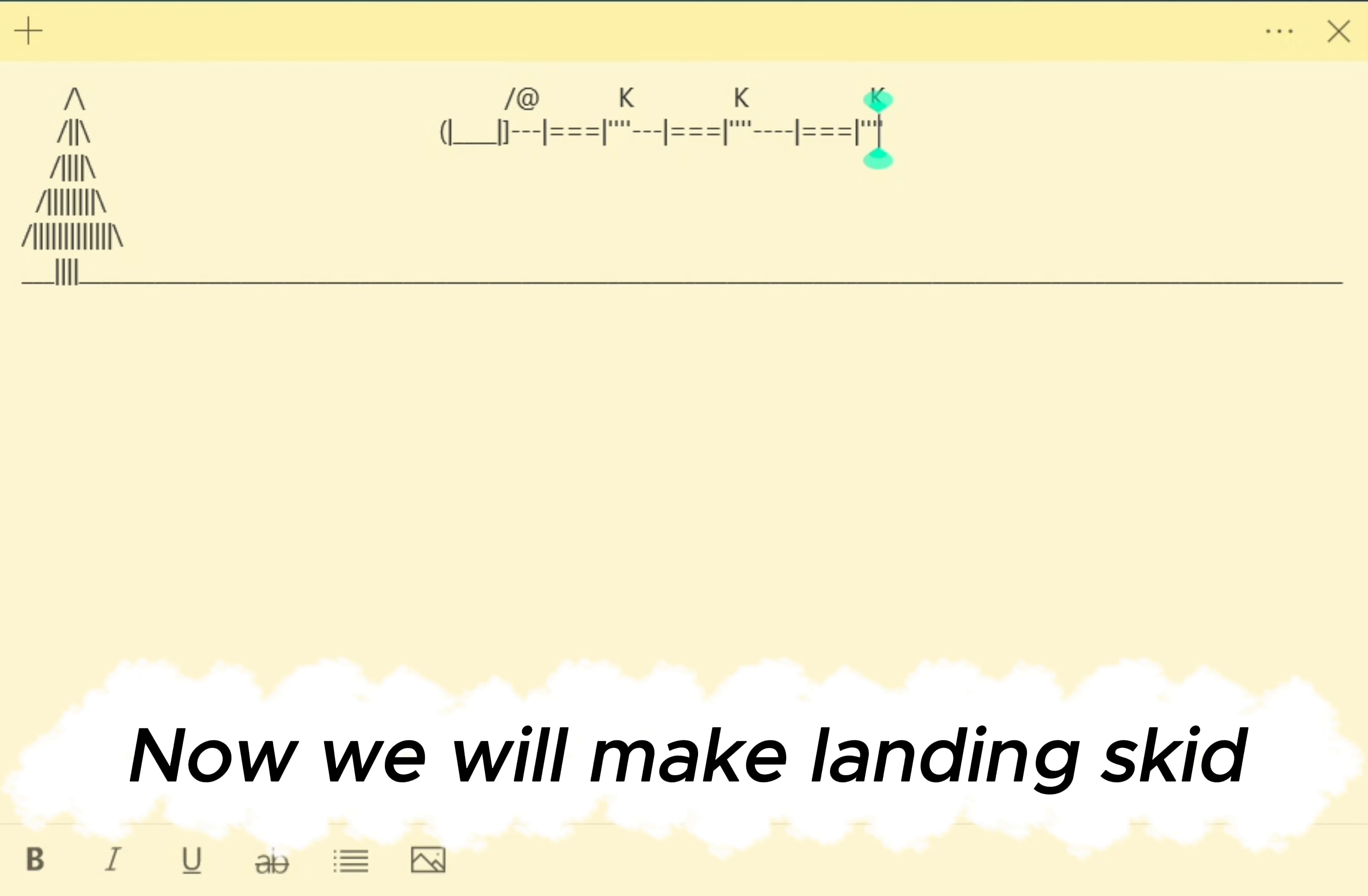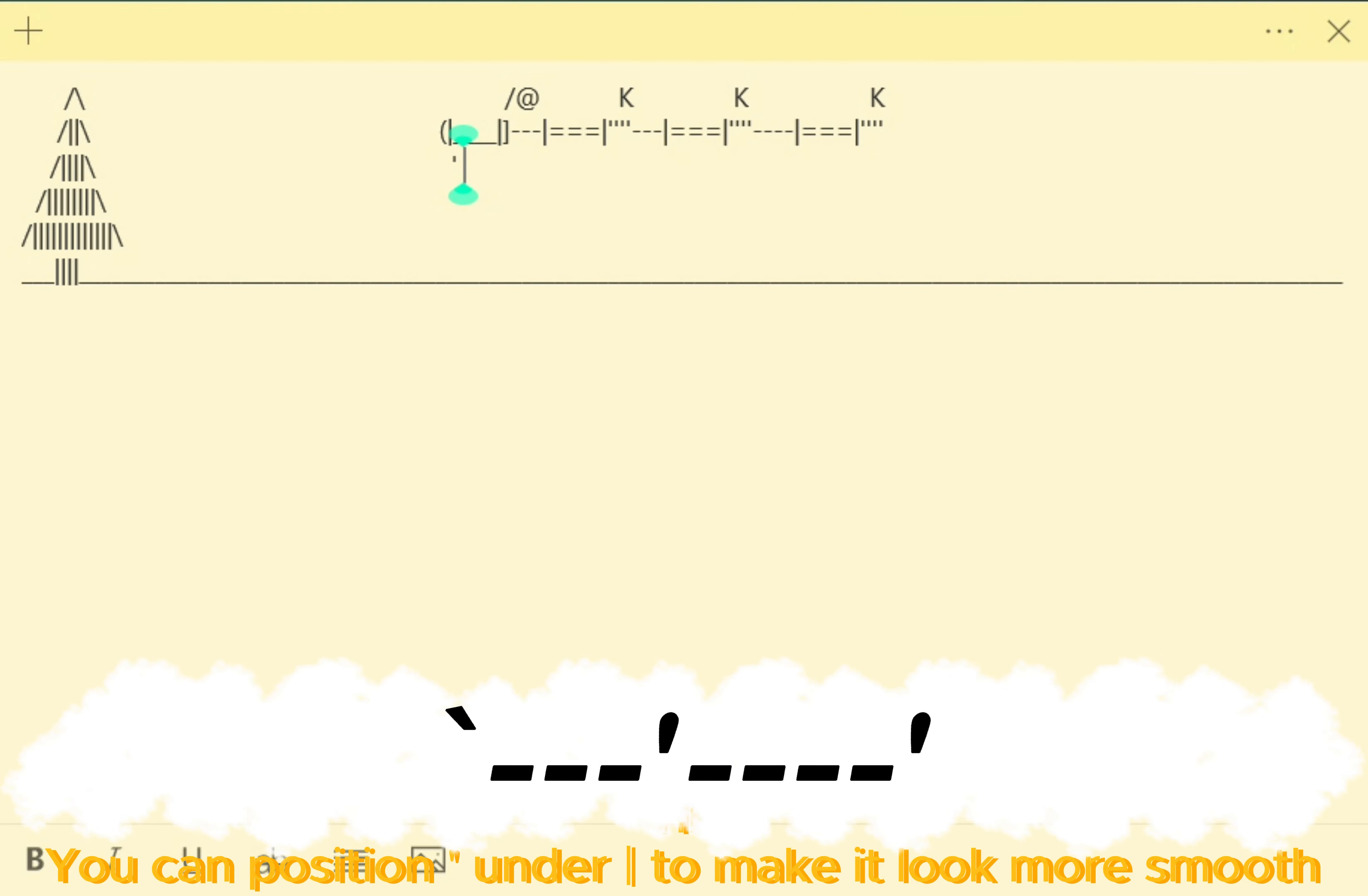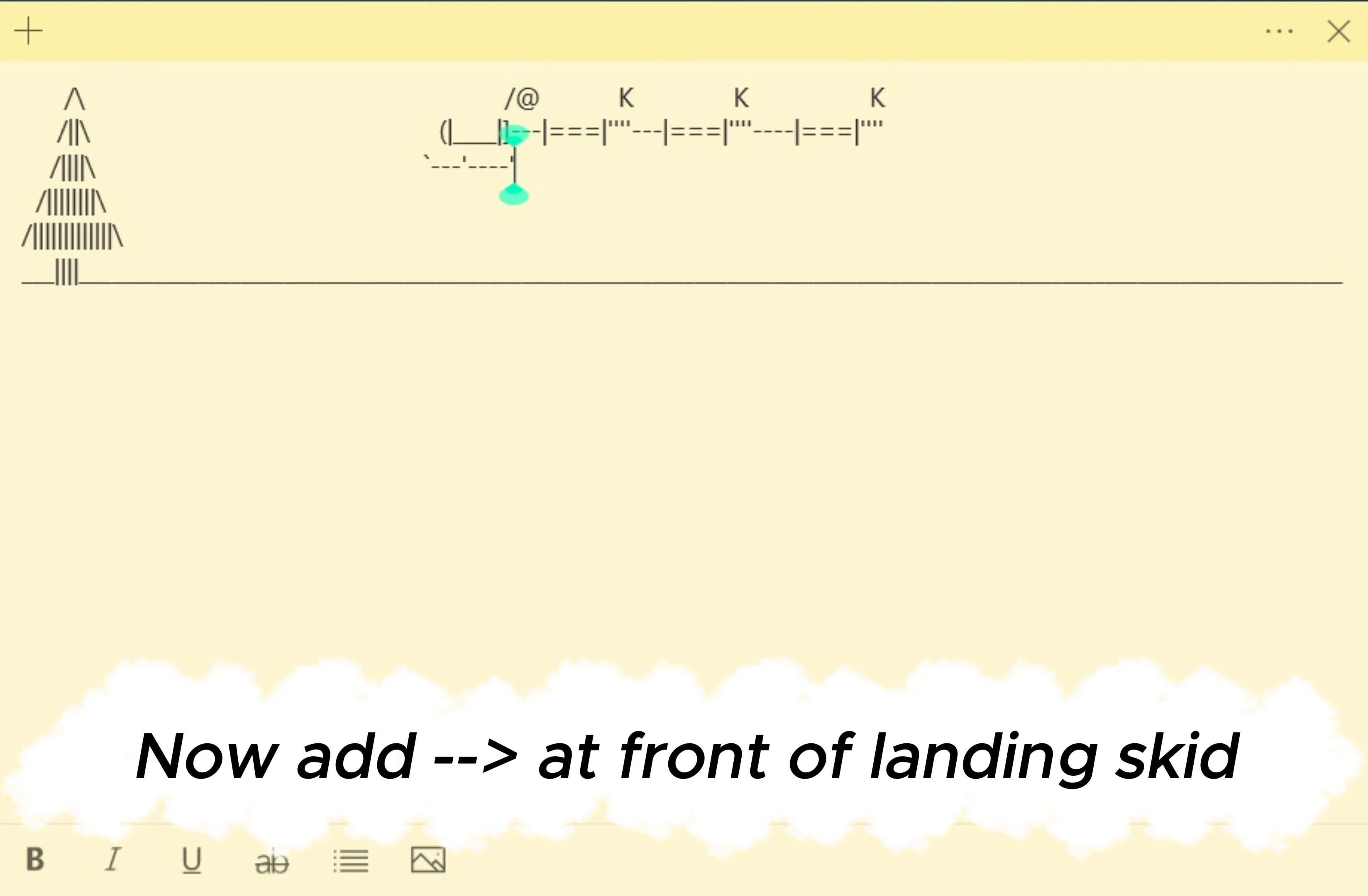Now we will make landing skid. Go under sleigh and put. Tip you can position under to make it look more smooth. Now add greater than at front of landing skid.